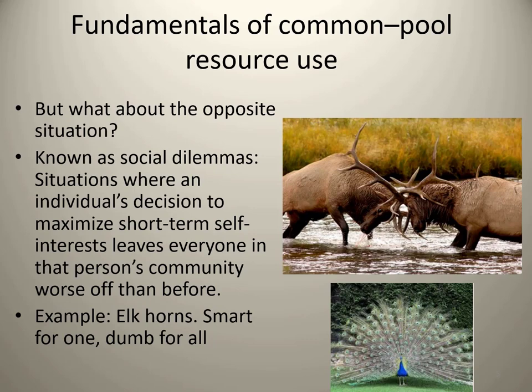This is a social dilemma between individual benefits — large horns for sexual selection — and group costs — increased vulnerability to predation. When individual decision makers reap all the benefits and bear all the costs, we get Adam Smith's invisible hand: private vice results in benefits for the group. However, when individuals reap all the benefits but only bear some of the costs, we end up with social dilemmas. The elk gets all the benefit of the large horns but only bears some of the costs, deferring increased predation risk onto the whole population.